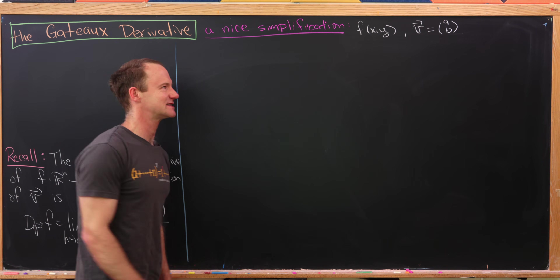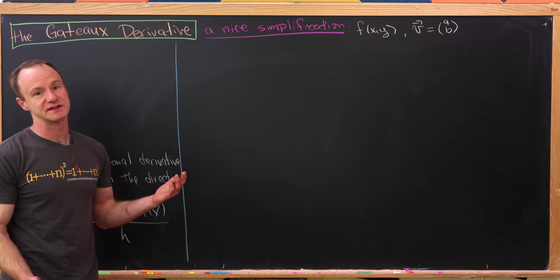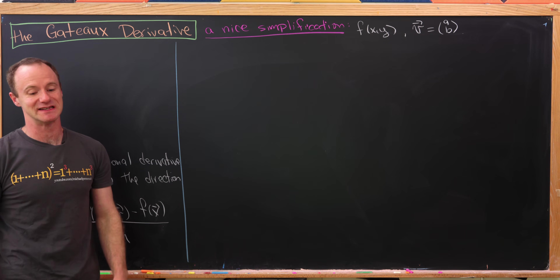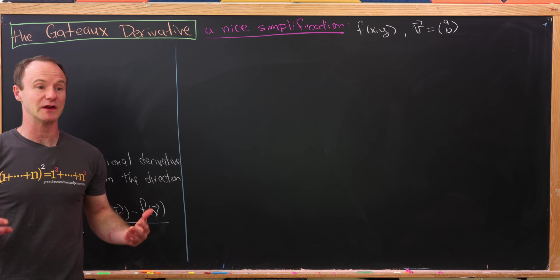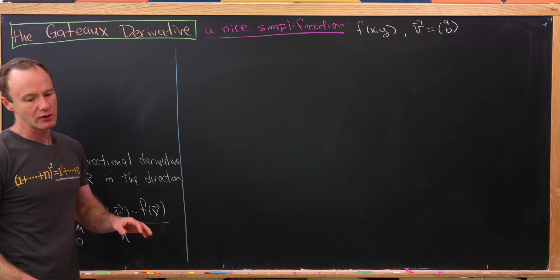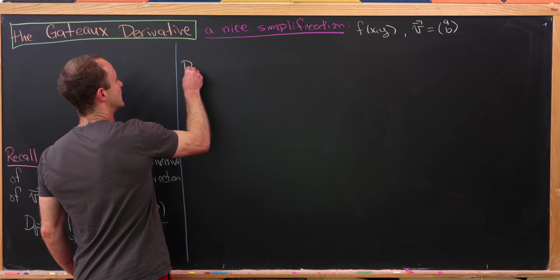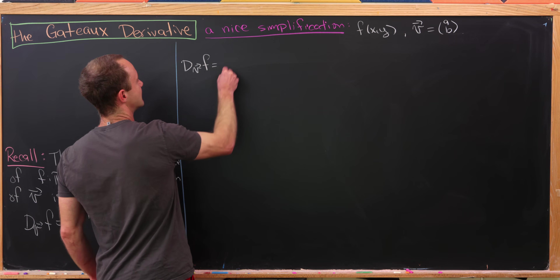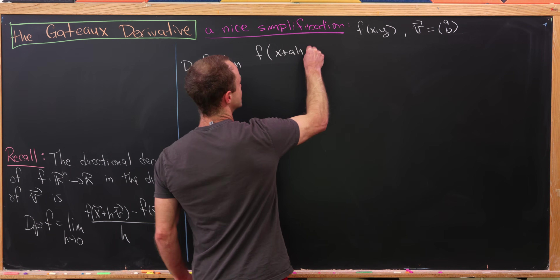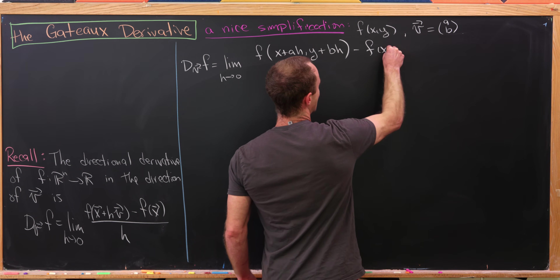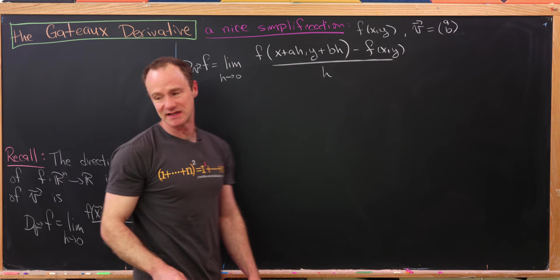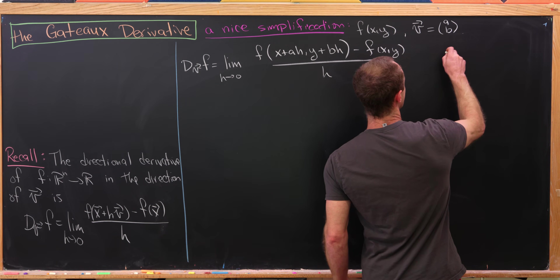Let's look at a simplification that occurs in R², in other words the plane, so we've got multivariable functions with just two variables. The derivative in the direction of v of f is equal to the limit as h goes to zero of f(x + ah, y + bh) − f(x, y), all over h. That just mimics the general definition because here x = (x, y) as a column vector, and x + hv turns into this when put into the multivariable function.